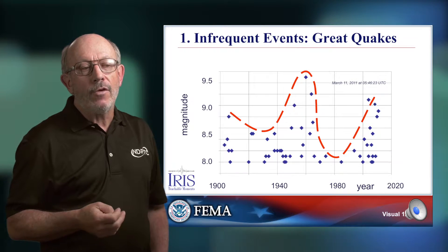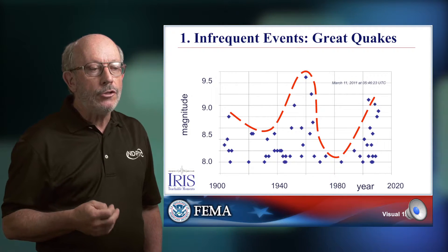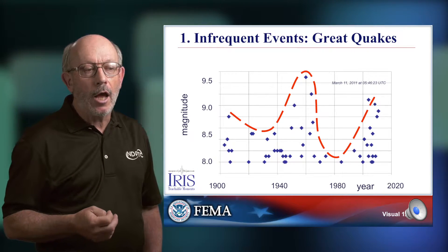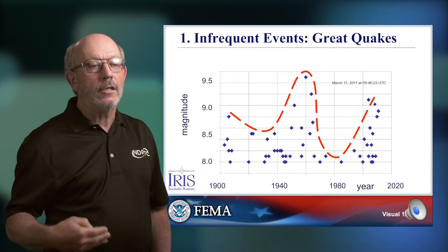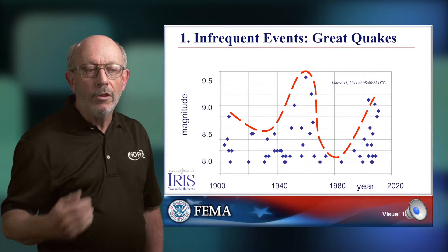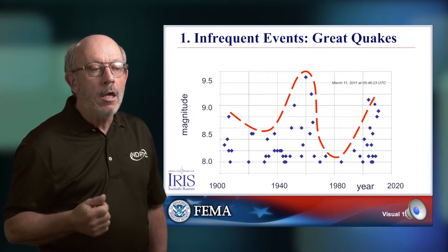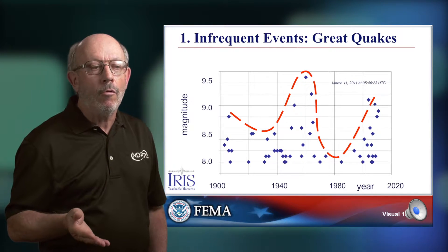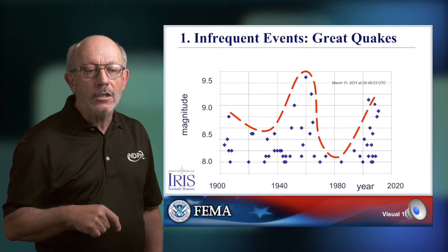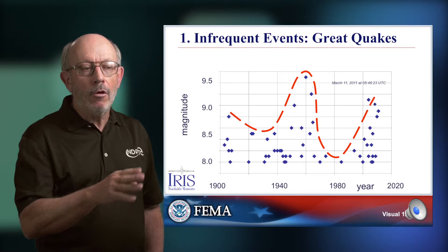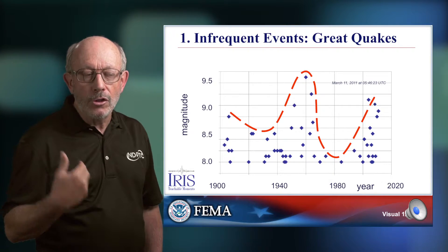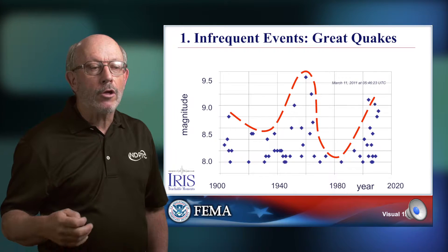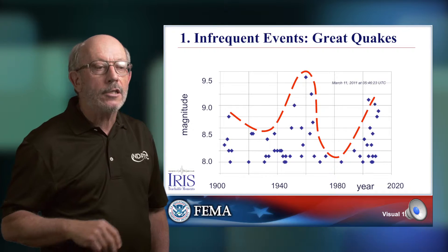The classic example of infrequent events are great earthquakes. This is a plot of earthquake magnitude against time for the last 120 years, and great earthquakes are everything above magnitude 9.0. There are two recent concentrations of great earthquakes — one we're experiencing now with Tohoku and the Indian Ocean tsunami — but then there's a lull, particularly in the 1980s through early 90s, with no great earthquakes at all. In those lulls, emergency managers and scientists grow complacent. These are the so-called black swans, one of the hardest tasks on our calendar.